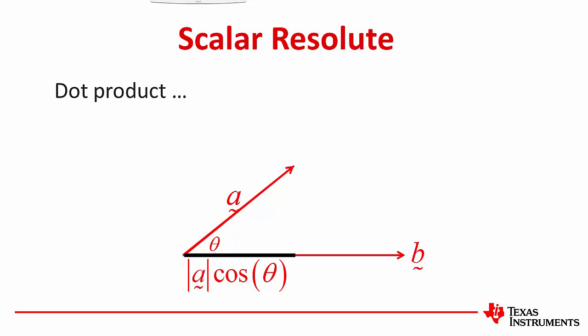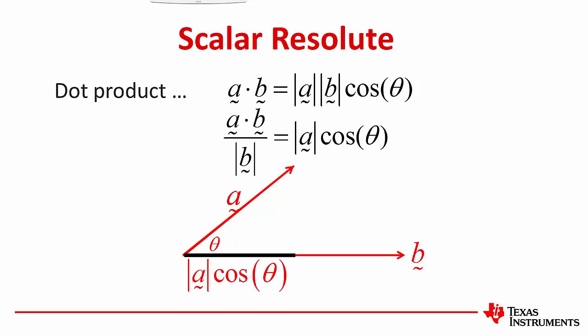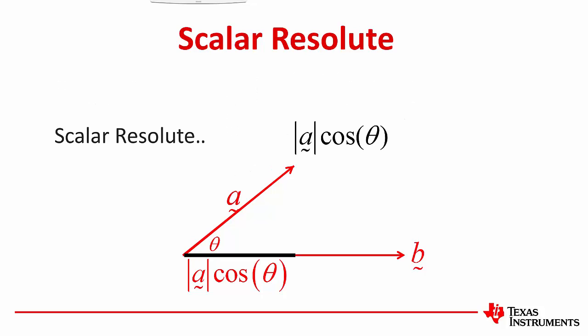Recall the rule for the dot product. And there, on the right-hand side of that equation, we see part of the expression for our scalar resolute. So we can transpose that equation so that the right-hand side is the scalar resolute. Often when we're required to calculate these sorts of problems, we're given information about the two vectors. So it's easier to use the left-hand side.